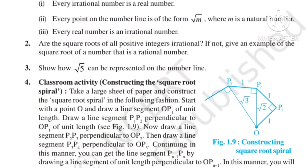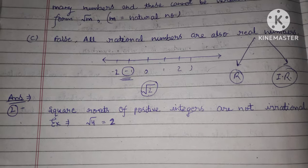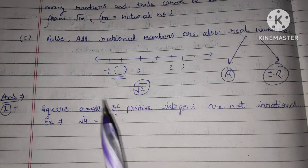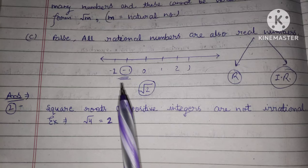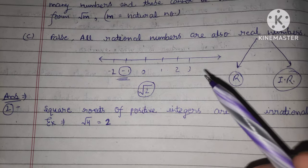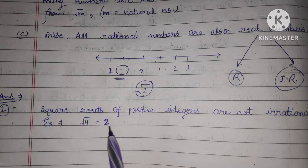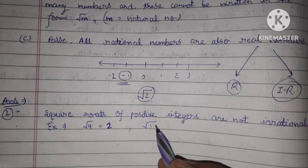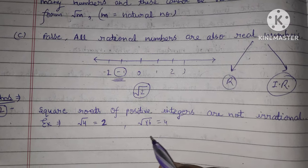The next question is: are square roots of all positive integers irrational? If not, give an example of a square root of a number which is a rational number. This is false. The square root of a perfect square is a rational number. For example, root 4 equals 2, which is a rational number. Similarly, root 16 equals 4, which is also a rational number.